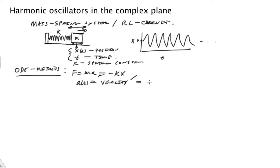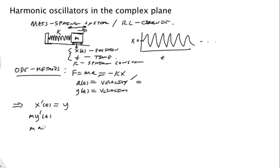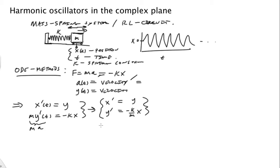Acceleration as a function of time is velocity prime. We'll label y(t) as velocity. So that implies x' = y, and m·y'(t) = -kx. We can rewrite this system as: x' = y and y' = -(k/m)x.